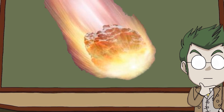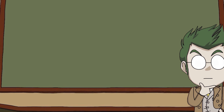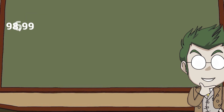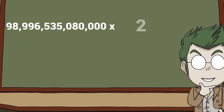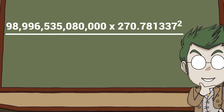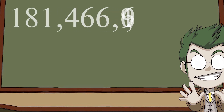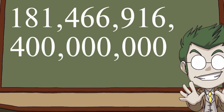Not necessarily — most of the heat would be on the bottom. But anyway, time to get into the bit we've all been waiting for. Force upon impact equals mv squared divided by 2 times sd. That gives us — drum roll — one hundred and eighty-eight quadrillion, four hundred and sixty-six trillion, nine hundred and sixteen billion, four hundred million newtons upon impact!